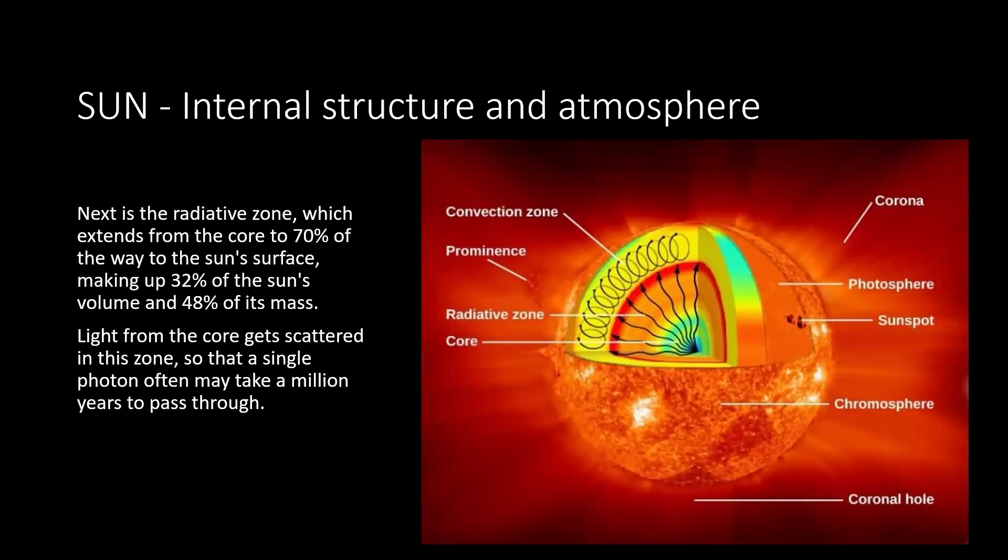Then comes the radiative zone, which extends from the core to 70% of the way to the Sun's surface, making up 32% of the Sun's volume and 48% of its mass. The core itself was 2% of the volume. This is 70% of the volume. But it is also 48% of the mass. So you've got tremendous amount of mass here and even more mass here. Now, the light from the core gets scattered in this zone so that a single photon often may take a million years to pass through. This is where the photon of light has to go through a tremendous amount of effort or time to get from point A to point B.